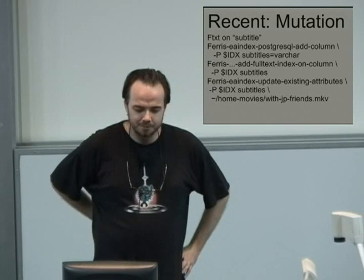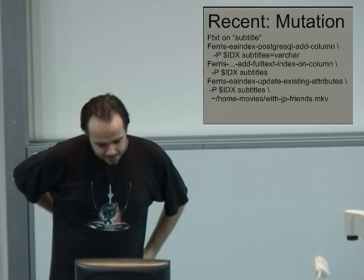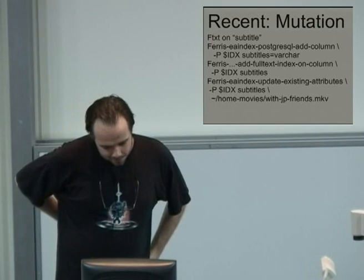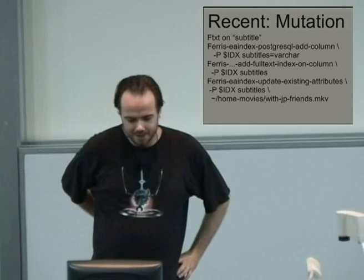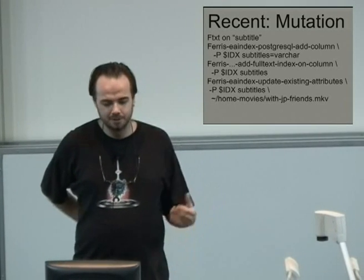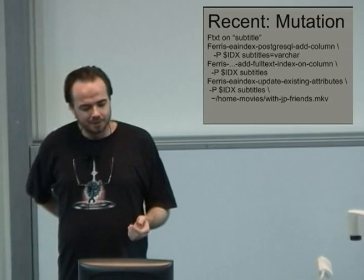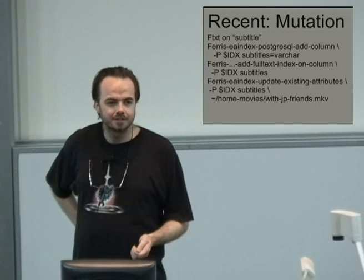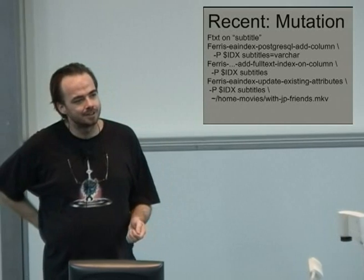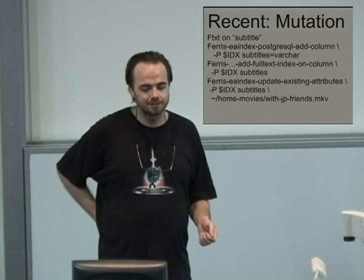Recent stuff in indexing is mutation: for Postgres indexes, you can add new columns and tell it to update the index with that and explicitly re-index specific files for that column. I've also started adding support for subtitles, so you can do full-text index search on subtitles for video files that you've indexed — though subtitles can be surprisingly large for certain files.